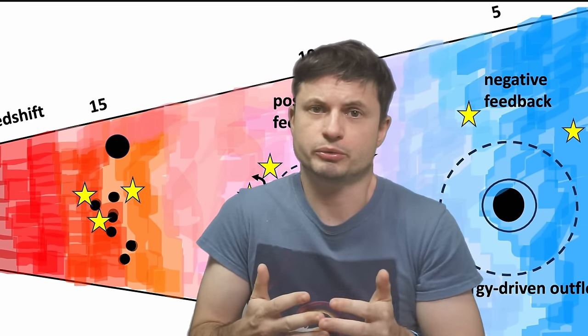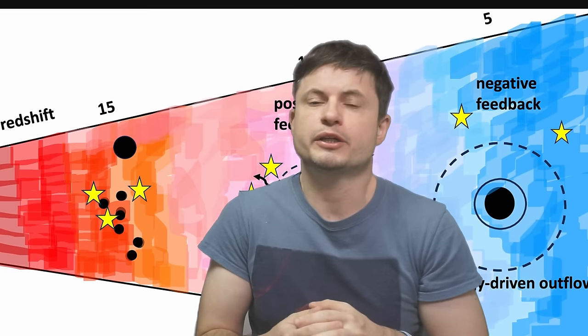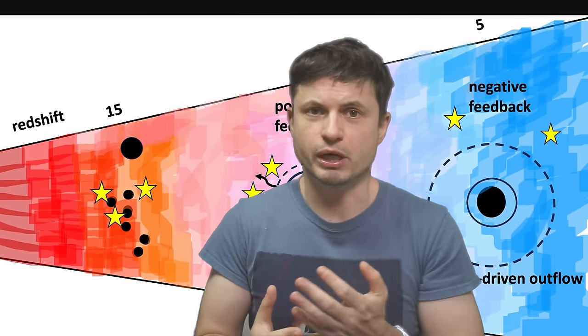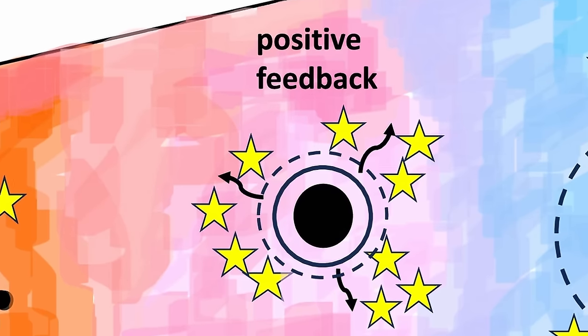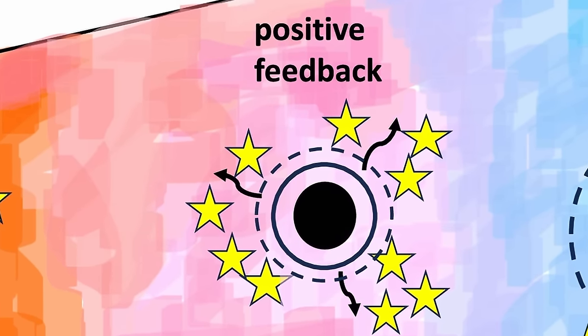It starts to churn the gas around even more and creates a huge amount of over densities around it, basically creating a kind of a positive feedback for the formation of a large number of new and possibly really massive stars.